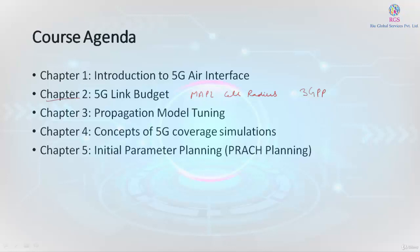The next chapter is called propagation model tuning. In this chapter, we are trying to understand what different cellular propagation models are available, like Okumura-Hata and COST 231 Hata, and how a deterministic propagation model differs from a semi-empirical propagation model. We will also cover how a model tuning process happens using a CW drive test and what important factors to consider during the CW test.